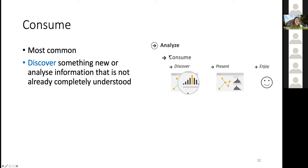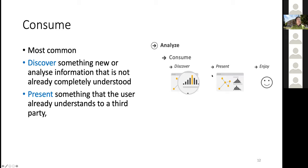Depending on the purpose of consuming, you can have three general categories. The first is discover — you're actually trying to find answers from the data set. The second is present — you already have the answers and you want to communicate them to someone else. For example, you've done your analysis, found your results, and now you talk to your manager using visualization to present findings. That's different because you already know the results.